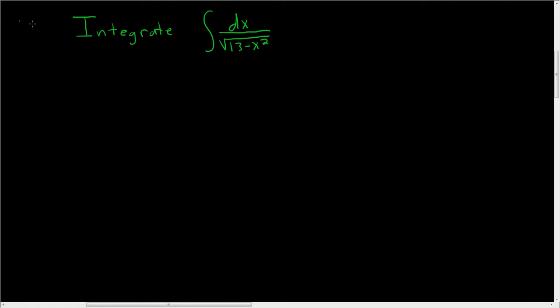We have to integrate 1 over the square root of 13 minus x squared. So the formula we're going to use is this one.